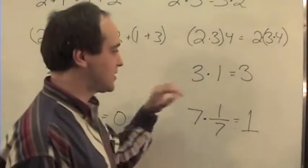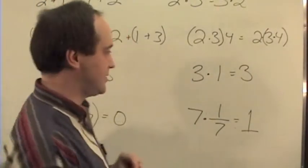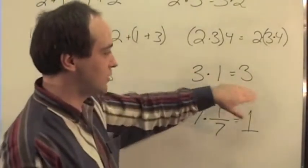On the multiplication side, the identity property is anything times 1 is itself. So 3 times 1 is equal to 3.